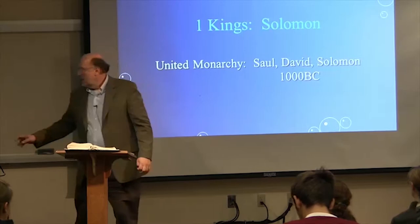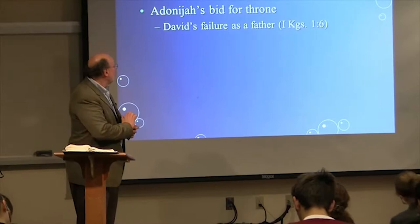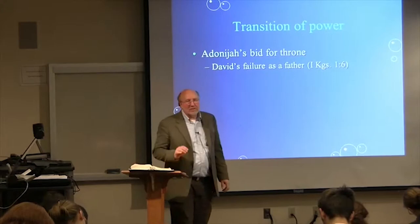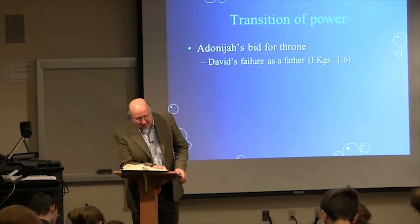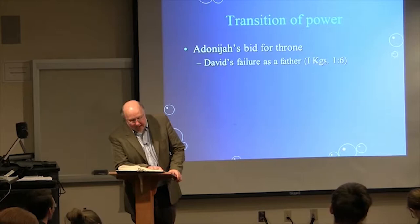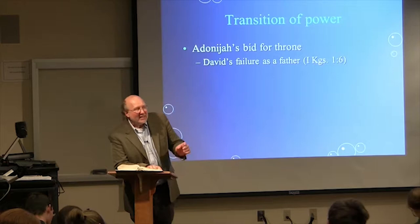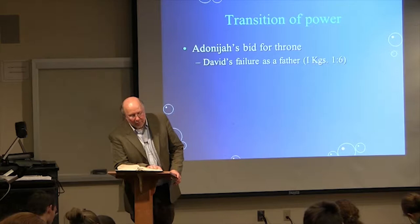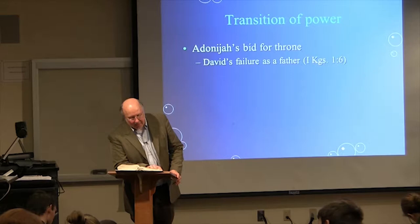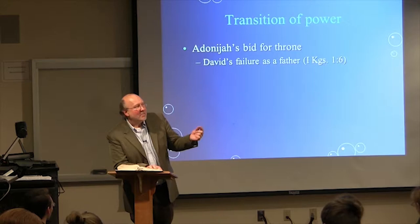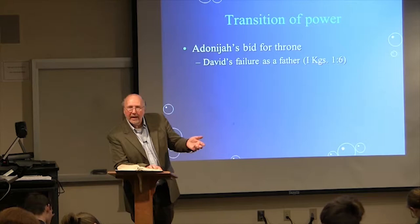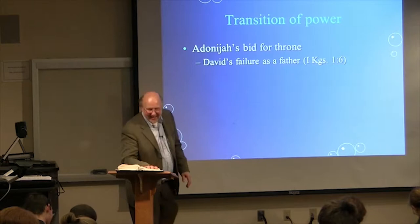Let's talk about Solomon and his transition of power. In 1 Kings chapter 1, we begin to see Adonijah's bid for the throne. Adonijah was Solomon's brother. Adonijah, whose mother was Haggit, put himself forward and said, 'I will be king.' He got chariots and horses ready and about 50 men to run ahead of him. He was also very handsome and was born next to Absalom. Does it help to be handsome if you're going to be king?